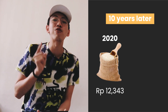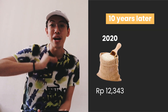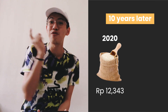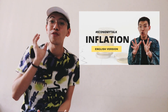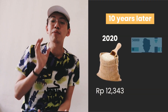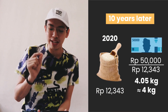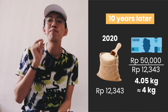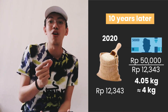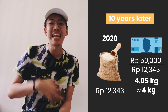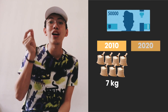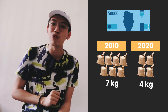But in 2020, one kilogram of rice had become 12,343 rupiah. The price increased due to inflation — if you're wondering what inflation is, you can see my video about inflation. So with 50,000 rupiah in 2020, you can purchase 50,000 divided by 12,343, which equals 4.05 kilograms, or about four kilograms. In 2010 you could purchase seven kilograms, while in 2020 you could only purchase four kilograms.